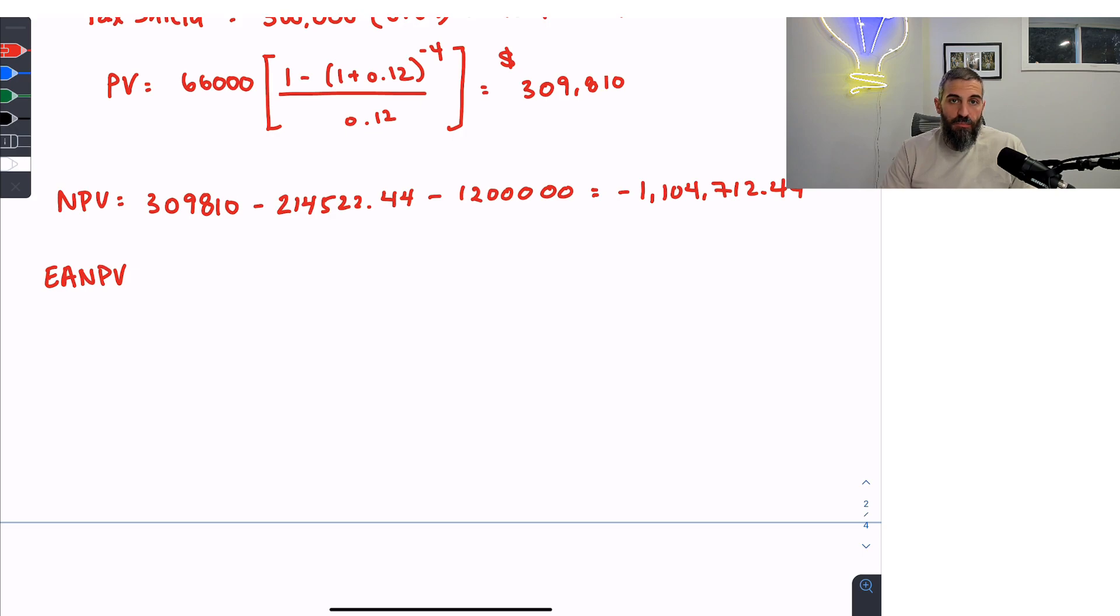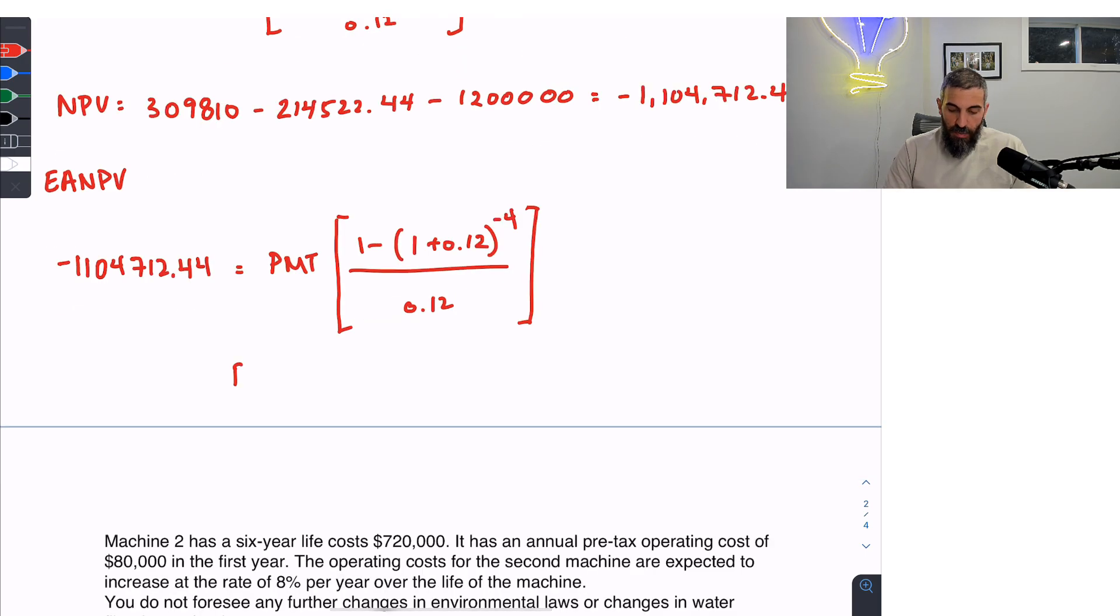So the next thing to do would be to go back to each one and calculate the equivalent annual net present value, which is simply done by taking your net present value and converting it to an annuity. I'm going to set my negative $1,104,712.44 as my present value and solve for the payment in an ordinary annuity. So I'm using the ordinary annuity formula with my net present value set as my present value, and I'm going to solve for the payment. You should get here a payment of about $363,709.40. So this means that this machine is costing us $363,709 per year.